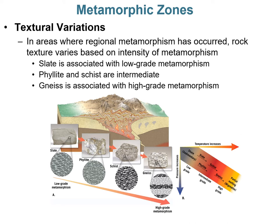There are textural variations with each metamorphic zone. As metamorphic grade increases, textures change. Slate has very small minerals all parallel and aligned. Moving up to phyllite, minerals grow slightly larger and foliation becomes wavy. In schist, minerals are large enough to see and appear in parallel layers. At the highest grade, gneiss shows compositional banding of light and dark silicates.